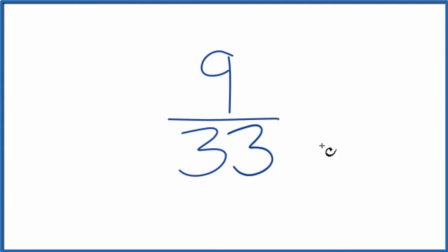To do that, we need to come up with a common factor, something that goes into 9 and 33. So here are the factors for 9 and 33.